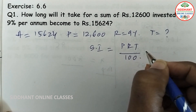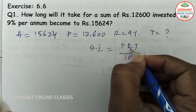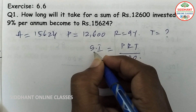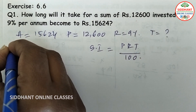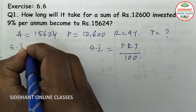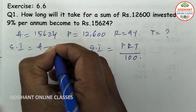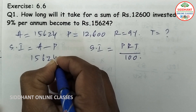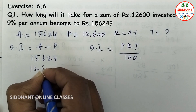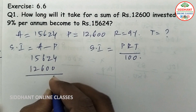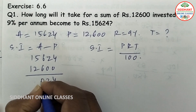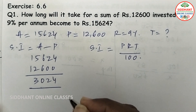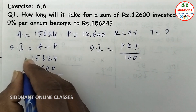In this formula, T we are going to find out where principal is given, rate is given, and simple interest we are going to find out first. We know that simple interest equals amount minus principal, so that means 15,624 minus 12,600. Then we get 3,024, which is the simple interest.